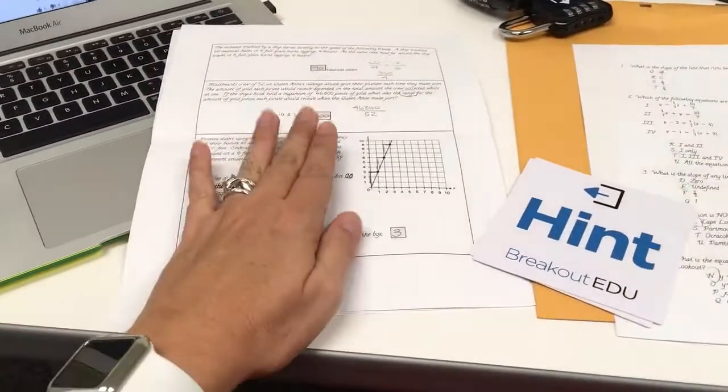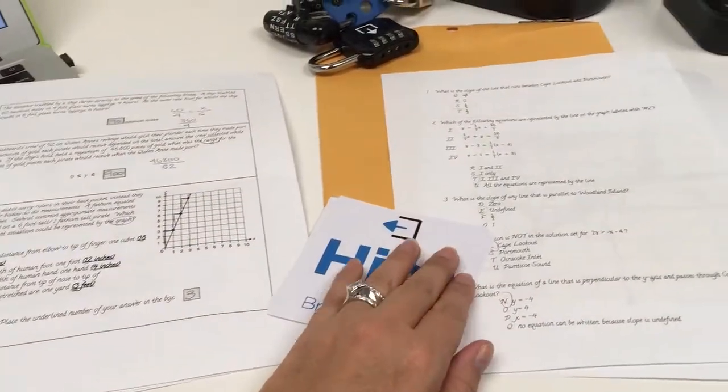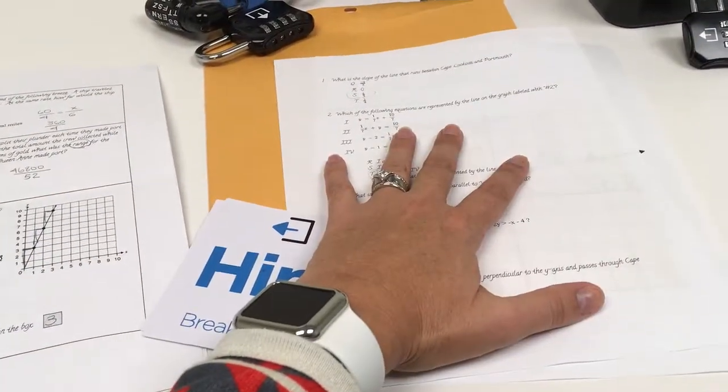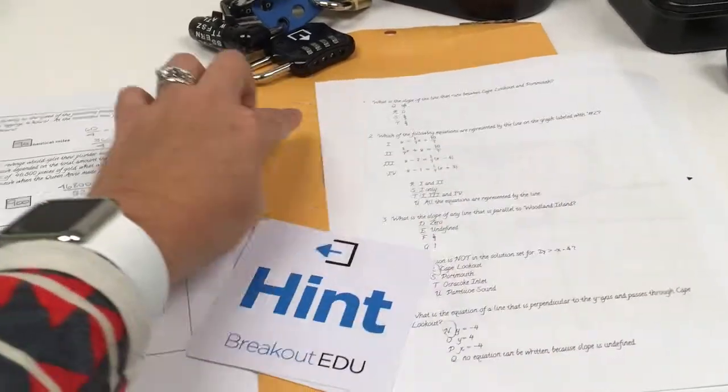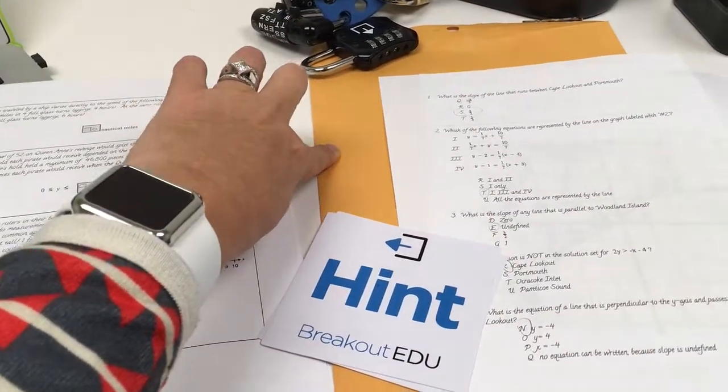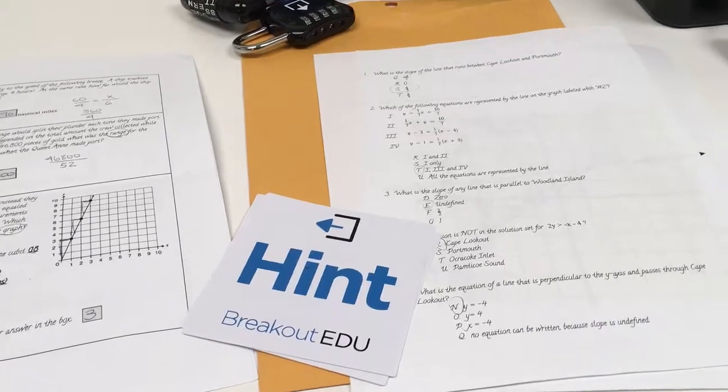On the table you'll have the four digit code pages, their hint cards, and the map with the map questions. I usually put them in an envelope all together but you can just lay them on the table if you'd like.